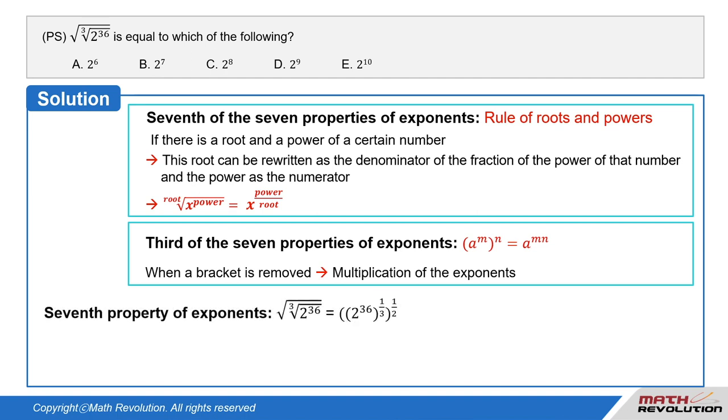Using the seventh property of exponents, square root of cube root of 2 to the power of 36 is equal to 2 to the power of 36 whole to the power of 1 over 3 whole to the power of 1 over 2.